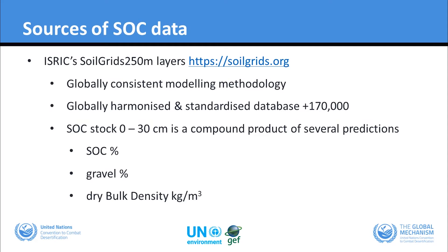Soil organic carbon stock from 0 to 30 centimeters — for UNCCD reporting purposes — is a compound product derived from several predictions within the SoilGrids environment: the soil organic carbon concentration, gravel percentage, and bulk density, for a given depth.